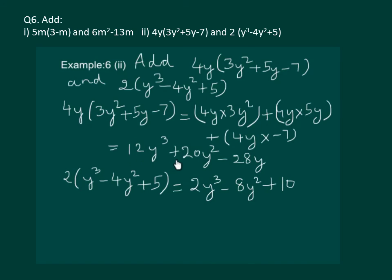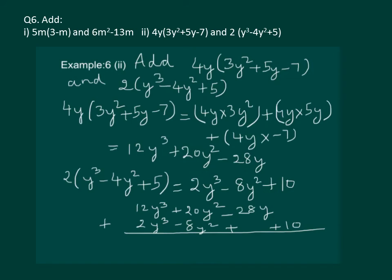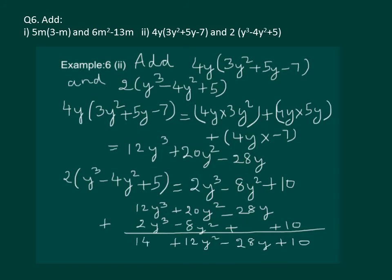Now, it remains to add the two simplified expressions by putting like terms together. On putting the like terms together, we get the expression. Let us solve it: we get 14y cubed plus 12y squared minus 28y plus 10. And this is the required answer.